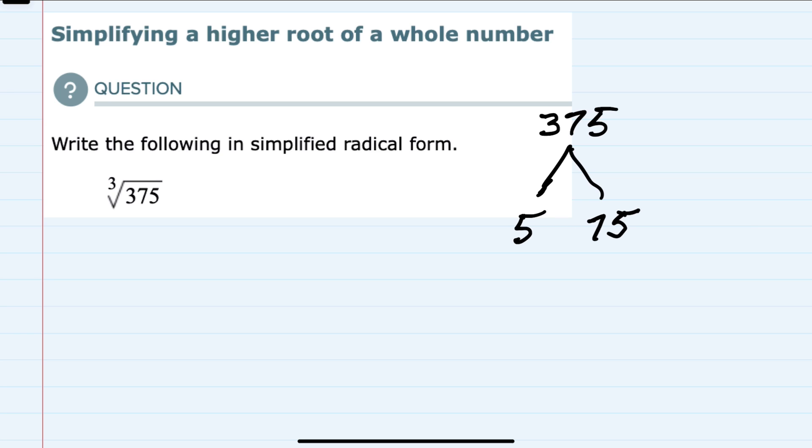so that's 5 times 75 gives me 375, and the 75 can be broken down further into 5 times 15, which can then be broken down further into 5 times 3.